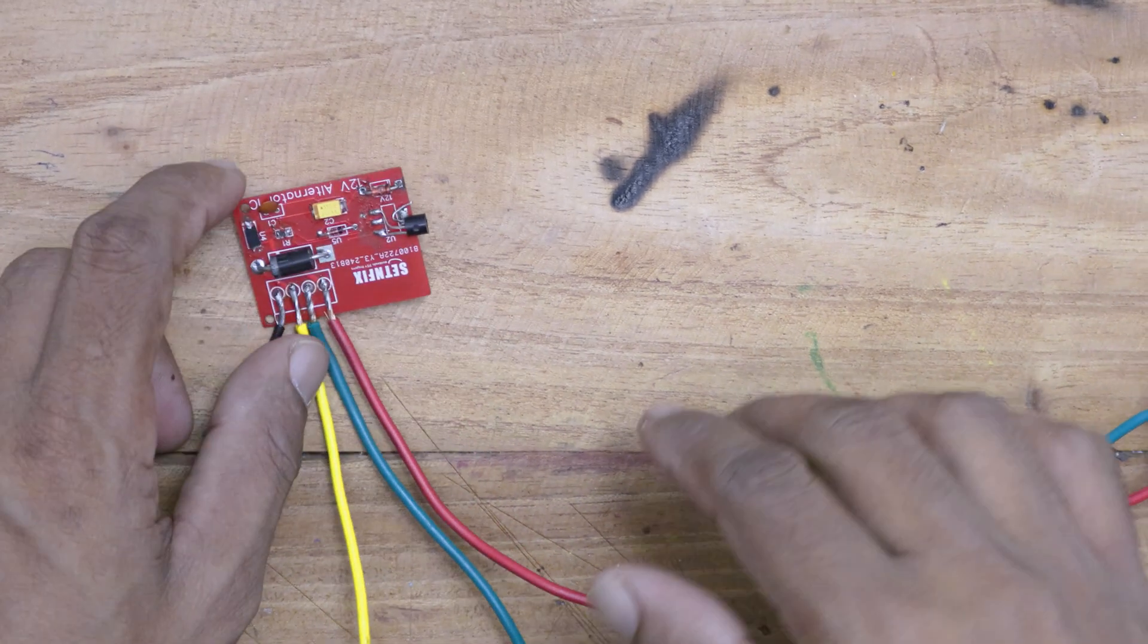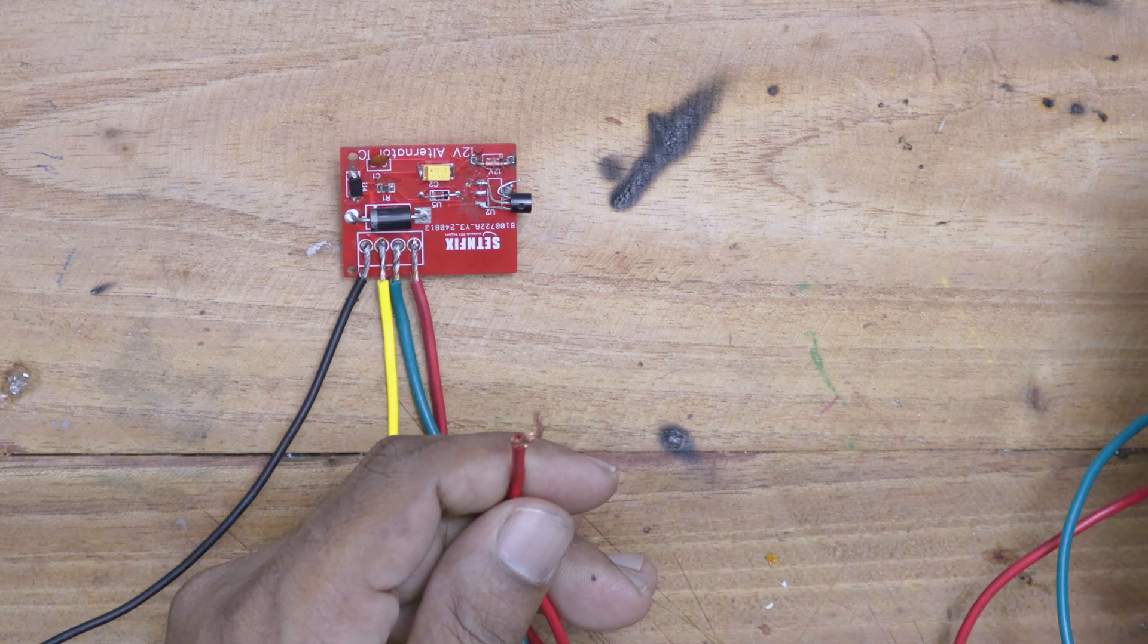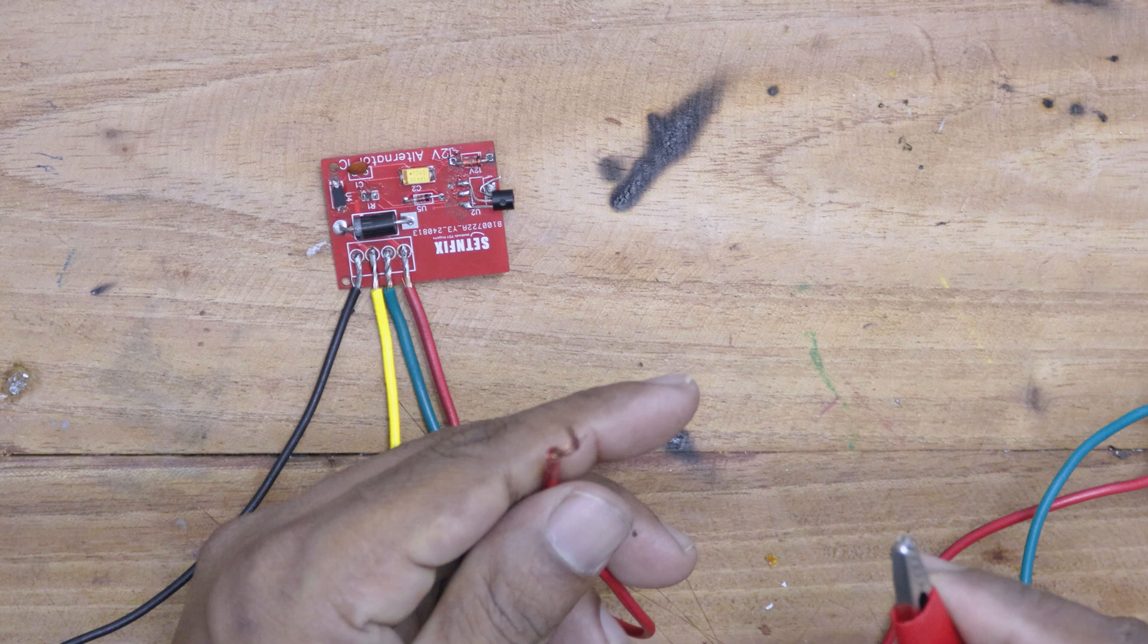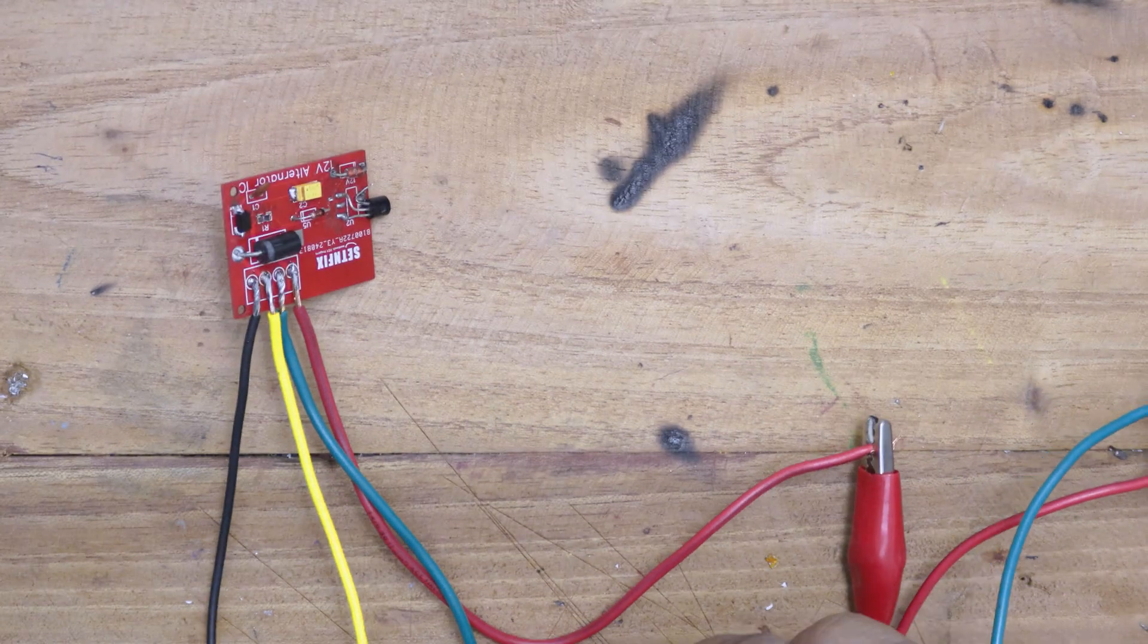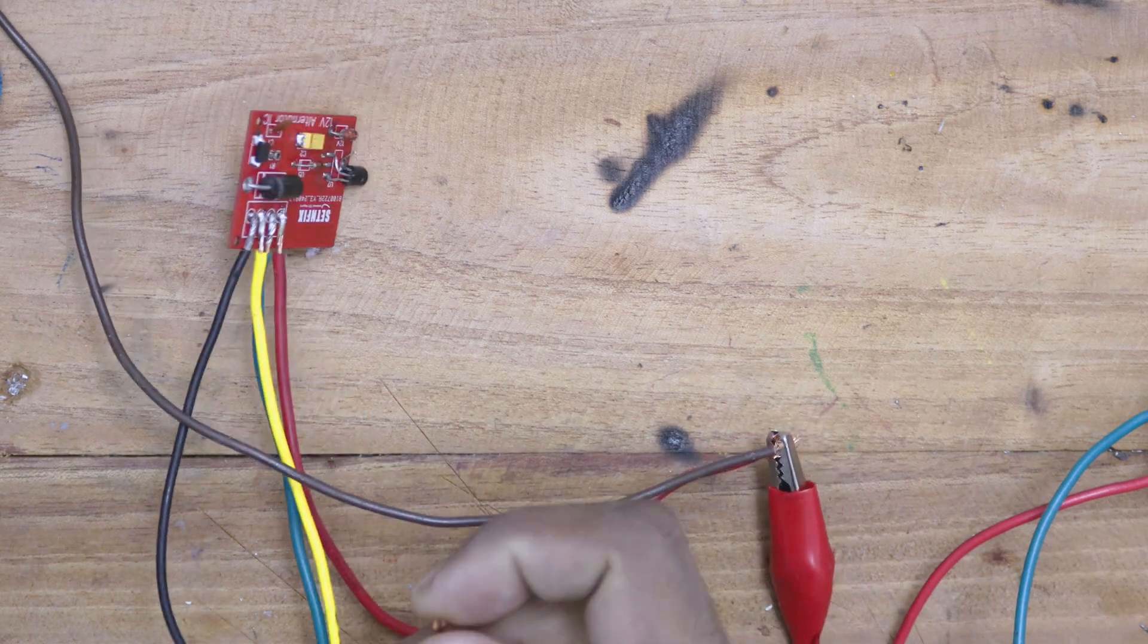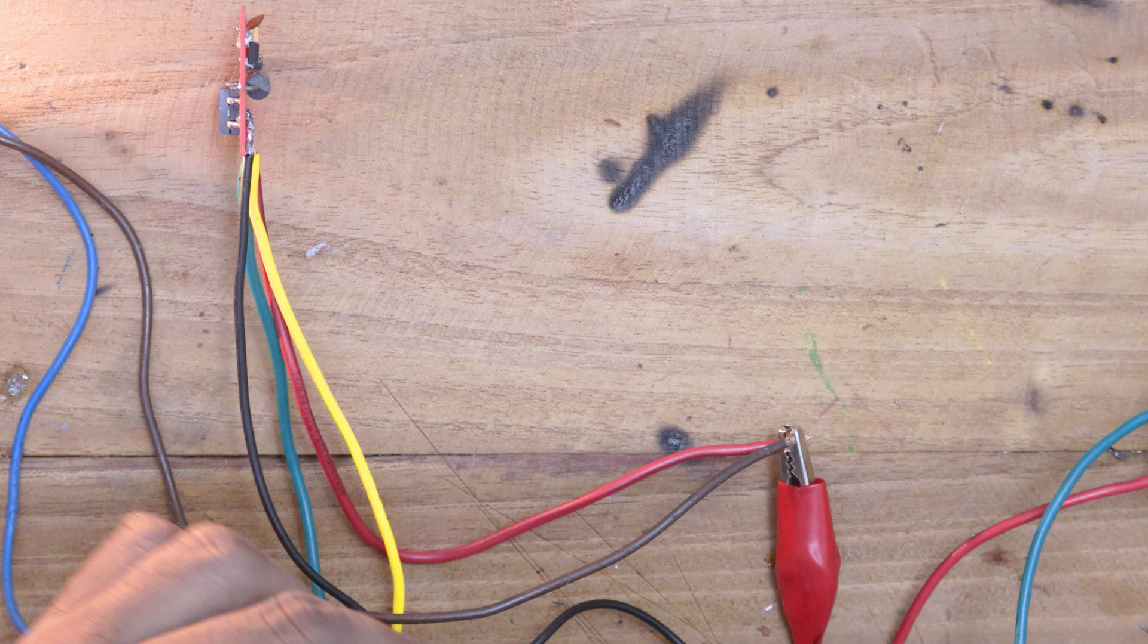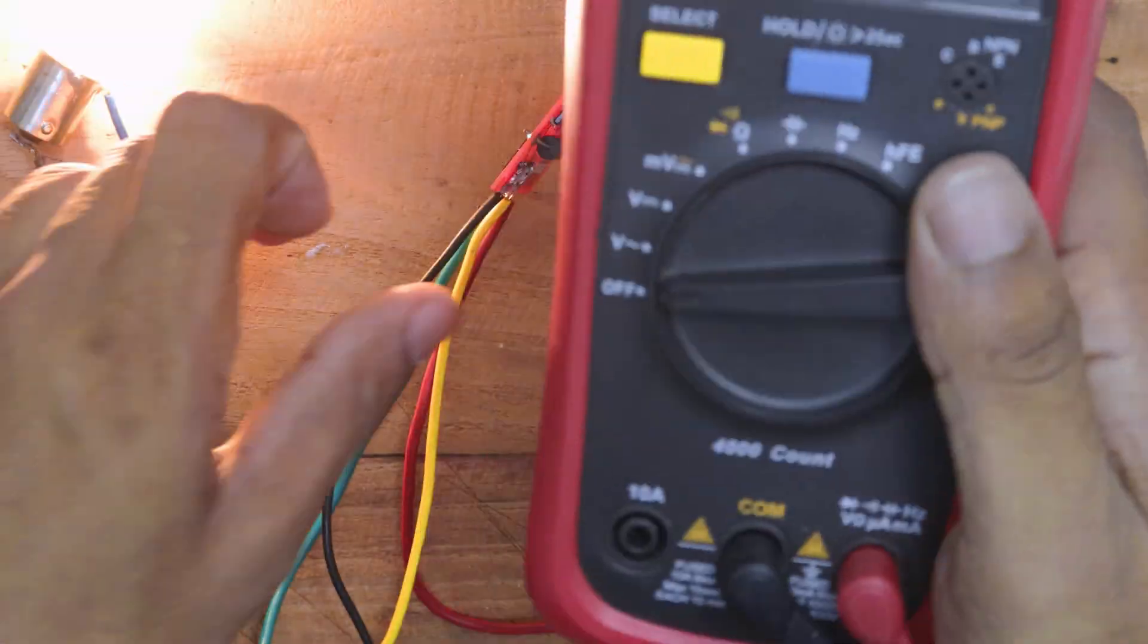Let's check the unit. First, connect the positive line to the red wire and the negative line to the black wire. I'm using a 12V bulb to demonstrate the operation of the field coil. Connect the positive line to one side of the bulb, and then connect the green wire to the other side. Next, I'll connect the multimeter to monitor the voltage.